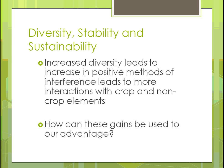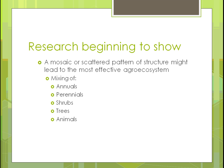Diverse stability and sustainability: increased diversity leads to more positive beneficial interactions and more interactions between crop and non-crop elements — the natural system starts working for you when you have more plants and animals. Research is beginning to show that a mosaic or scattered pattern — mixing annuals, perennials, shrubs, trees, and animals — helps create better structure for an ecosystem. The more you mix and scatter different things in different places on your farm, the better that agroecosystem is going to become, turning into a truly self-sustaining ecosystem.